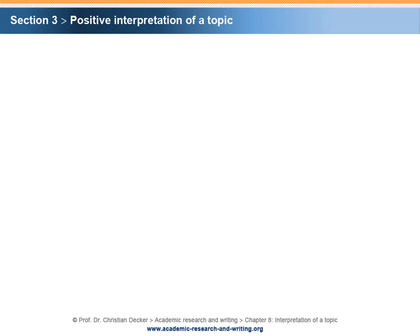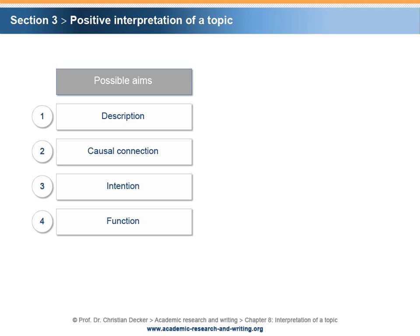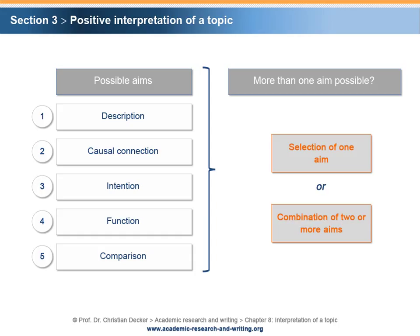The positive interpretation intends to identify possible aims of a research project. Potential aims of research projects are: Description, Causal connection, Intention, Function, and Comparison. In many cases, there is more than one aim possible, either requiring a selection of one aim or allowing for a combination of two or more aims in a research or thesis project.